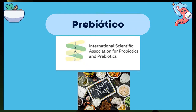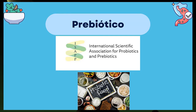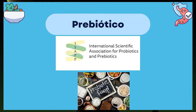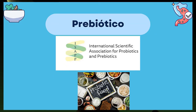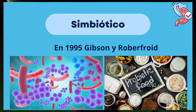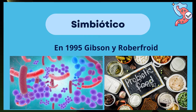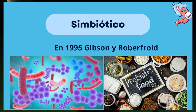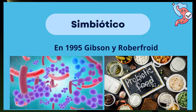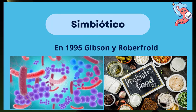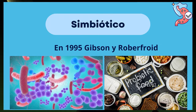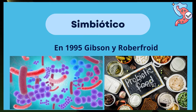Desde su inicio, el término prebiótico se estableció a partir del concepto probiótico para definir los sustratos que servían de nutrientes selectivos para estos microorganismos beneficiosos. La Asociación Científica Internacional de Prebióticos y Probióticos (ISAPP) publicó recientemente un consenso que identifica al prebiótico como un sustrato utilizado selectivamente por los microorganismos del hospedador, confiriendo un beneficio para la salud. El término simbiótico fue definido por primera vez en 1995 por Gibson y Roberfroid como una mezcla que comprende microorganismos vivos y sustratos utilizados selectivamente por los microorganismos del hospedador, incluyendo tanto microorganismos autóctonos como microorganismos aplicados externamente o probióticos propiamente dichos.